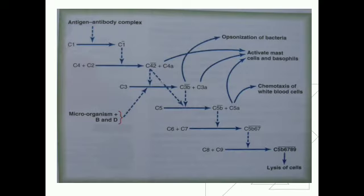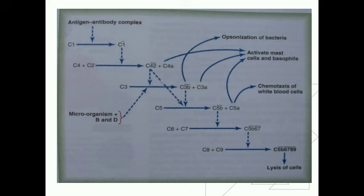From the diagram, the antigen-antibody complex activates C1 (a horizontal line on the complement protein indicates the active form). Activated C1 causes activation of C4 and C2; C4 plus C2 is converted into C42 and C4a. C42 activates C3, converting it into C3b and C3a. C3b activates C5, converting it into C5b and C5a. C5b activates C6 and C7, forming C5b67, which then activates C8 and C9 to form C5b6789.